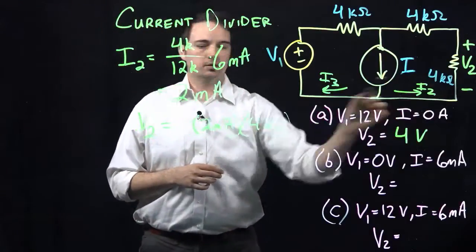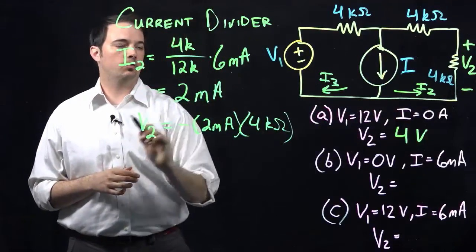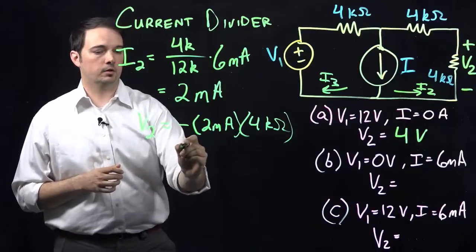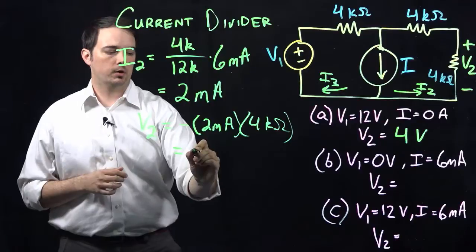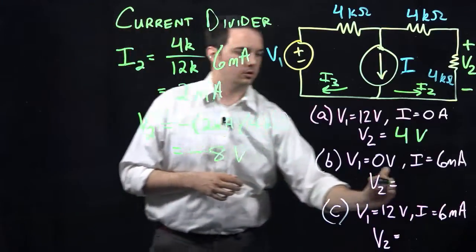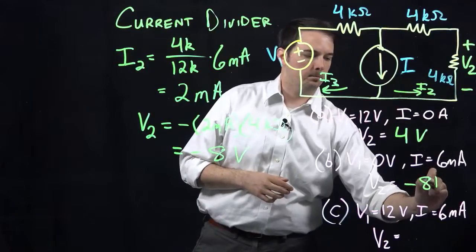So because of this, we need to indicate this as a negative quantity overall in order so that we're in sync with the polarities that have been defined for us. So here we would have a total value of negative 8 volts as our solution for part B.